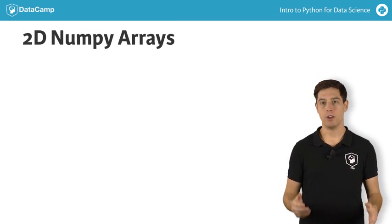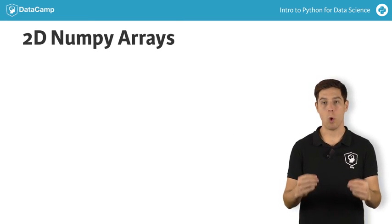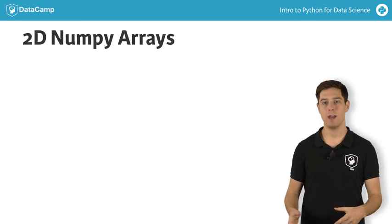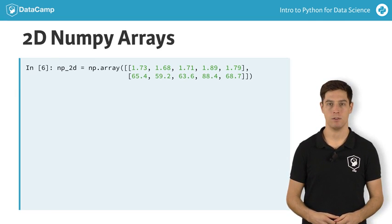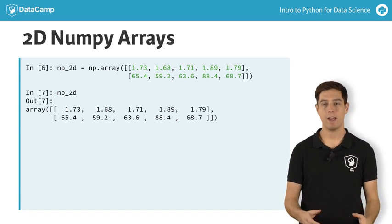You can create a 2D numpy array from a regular Python list of lists. Let's try to create one numpy array for all height and weight data of your family, like this. If you print out np2d now, you'll see that it is a rectangular data structure.